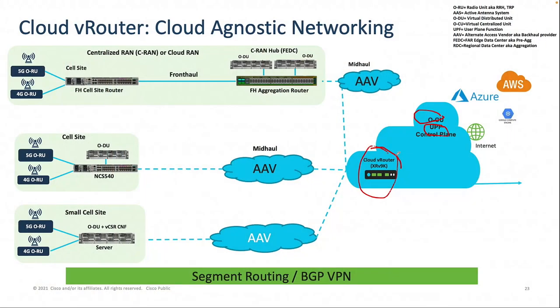This would also allow you to get rid of the RPS if you are doing a Metro E style. Another big change happening in the network is operators — like DISH which recently announced — are putting workloads in the cloud, like OCU and UPF, on AWS. This is where we are positioning a solution: cloud-agnostic networking using a virtual XRv 9K router. Remember I talked about segment routing on-prem? You can actually extend it all the way to off-prem and into the cloud. The key takeaway is your workloads can sit anywhere.